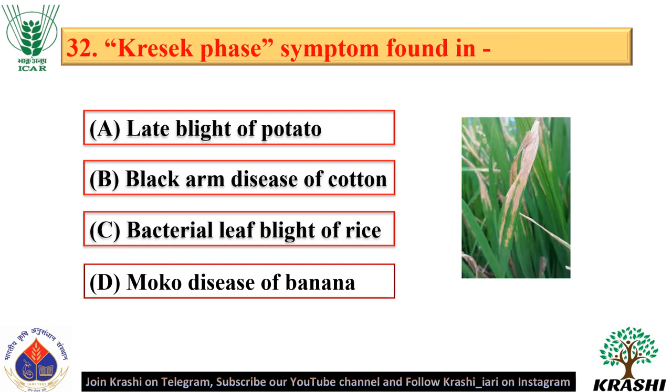Question number 32. Kresek phase symptom is found in bacterial leaf blight of rice — option C.